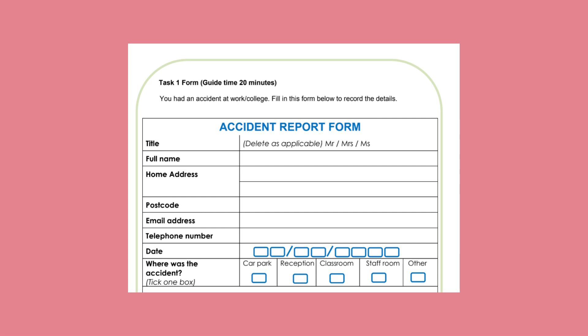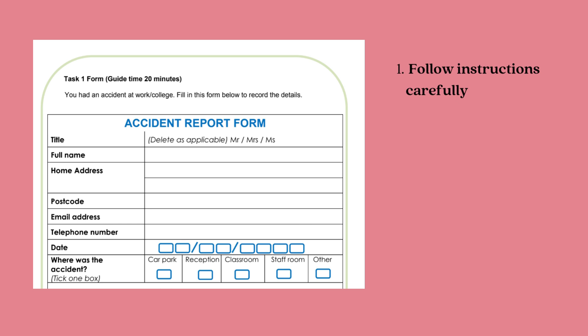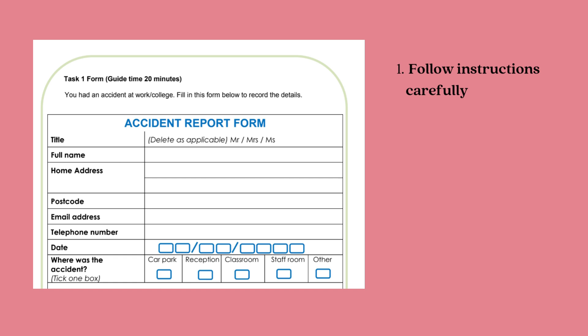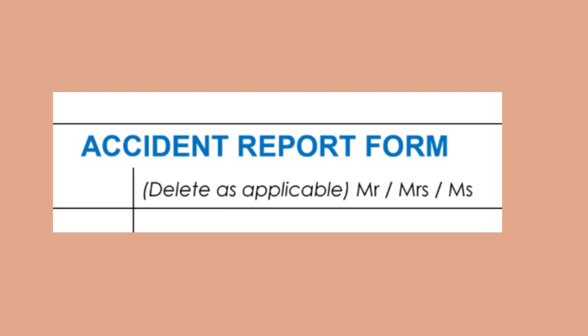For the form in task 1 you have to follow the instructions carefully. I know many learners who, instead of focusing on what is in front of them, they're thinking about either task 2 or 3, or just not paying attention. Just pay attention to what is in front of you and follow the instructions carefully. A common instruction that tends to come up a lot in the task 1 form is where you have to delete as applicable.